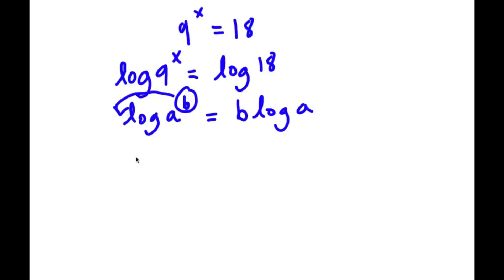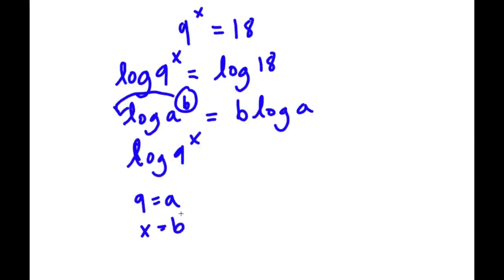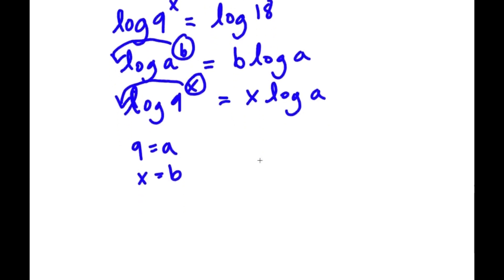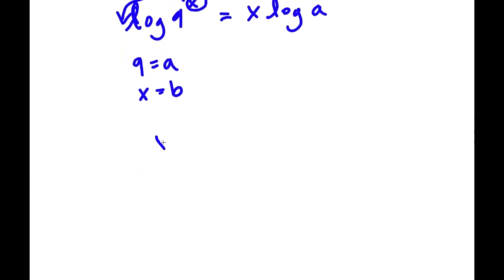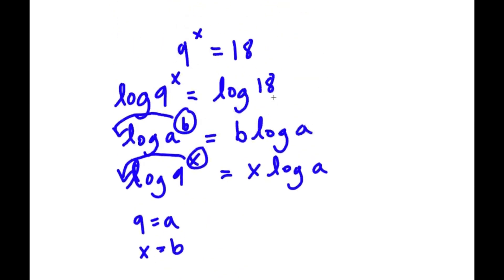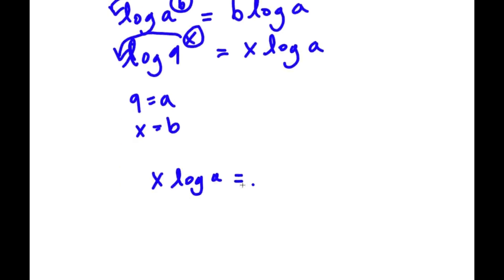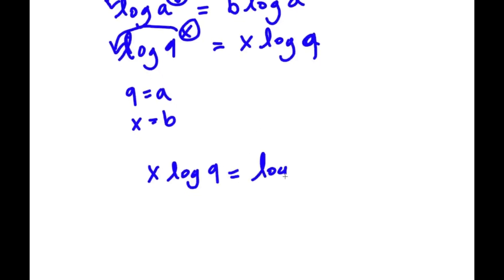So I'm going to use this property on log 9 to the power of x. We can think of 9 as a and x as b. So I'm going to move x to the front of the logarithm. So this is going to equal x times log 9. So now I have x times log 9 is equal to log 18.